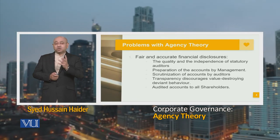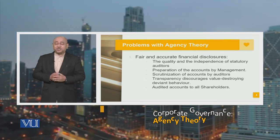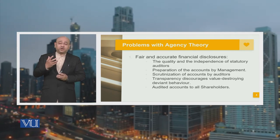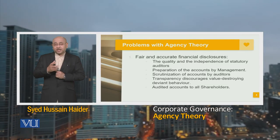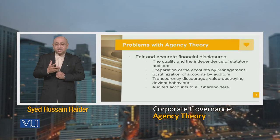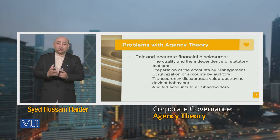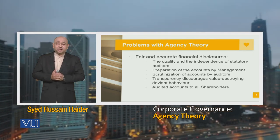When talking about the problems with agency theory, fair and accurate financial disclosures are very important. This includes the quality and independence of statutory auditors, the preparation of accounts by management, the scrutinization of accounts by auditors, transparency, discouraging value-destroying deviant behavior, and audited accounts being made available to all shareholders. These are things which can ensure that the overall structure of the organization remains constructive.